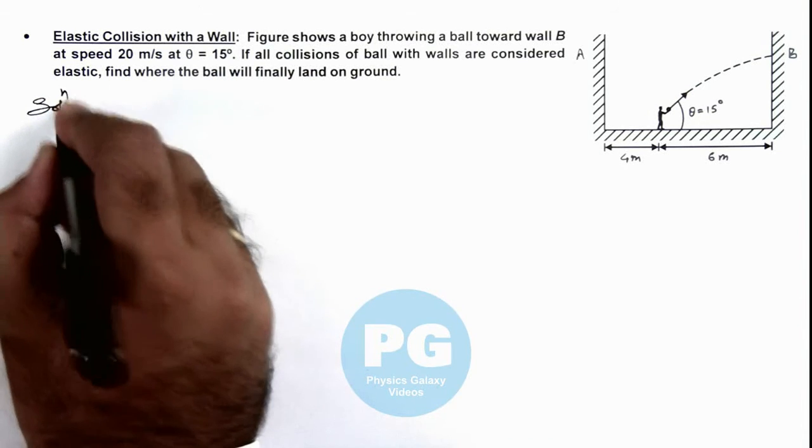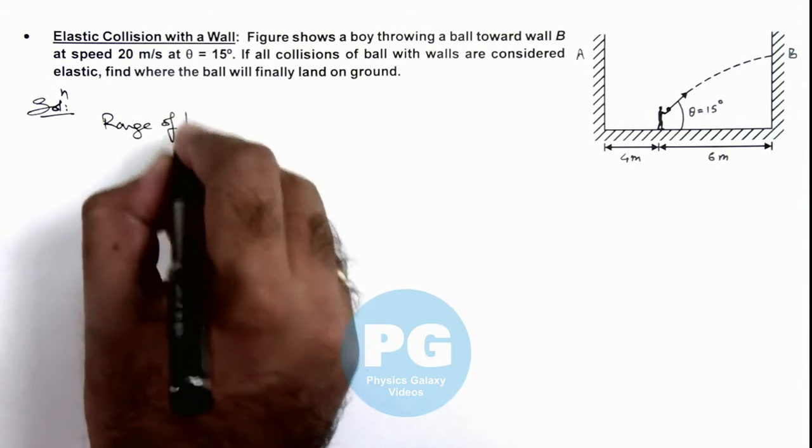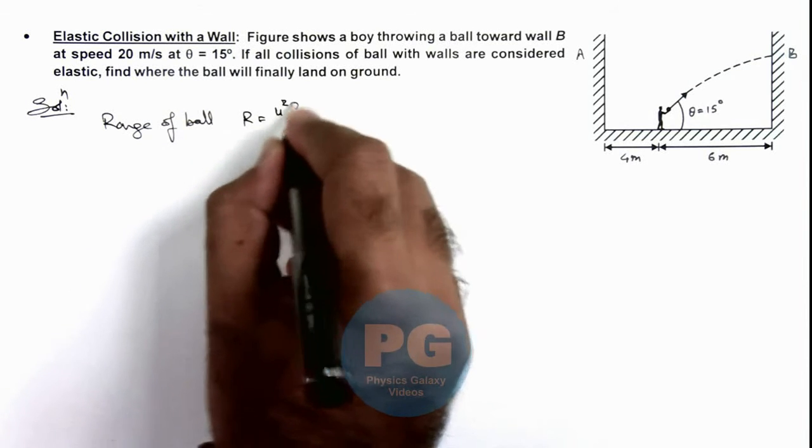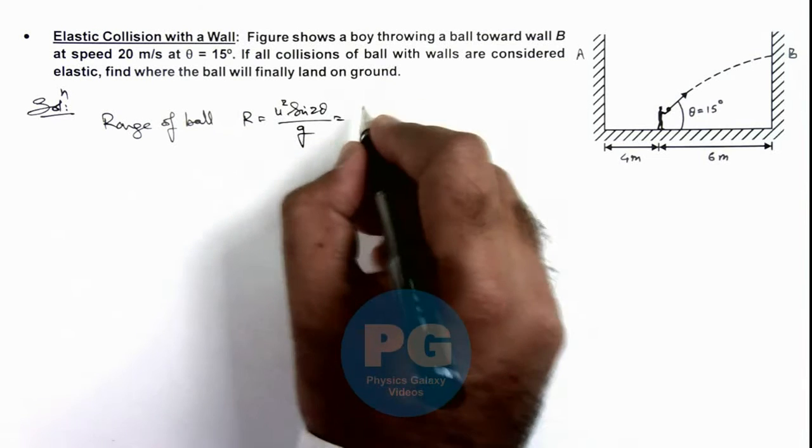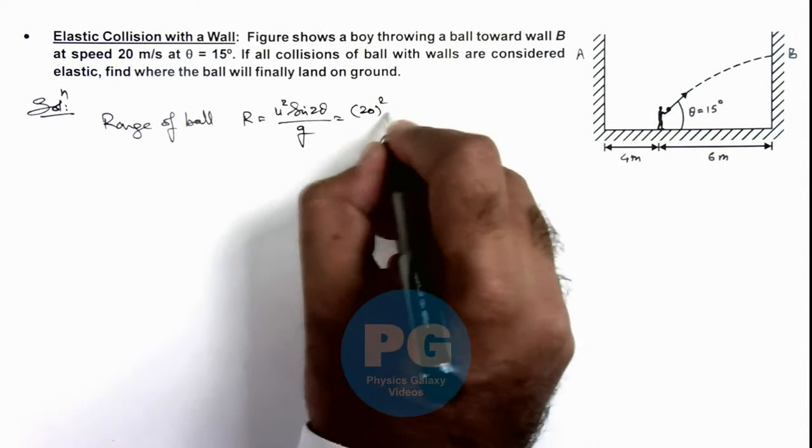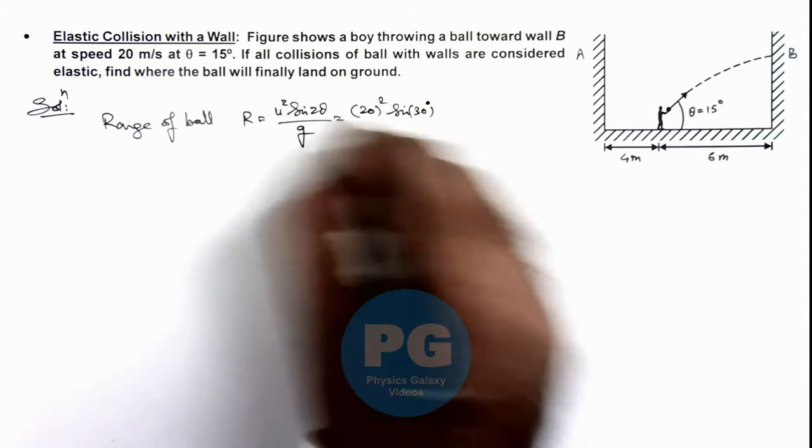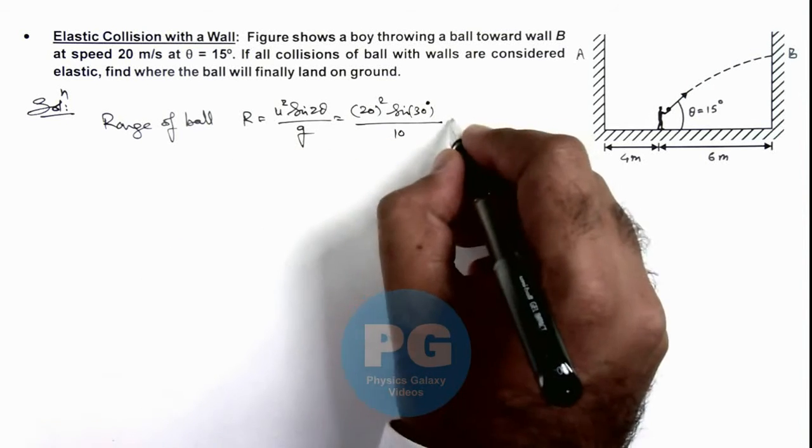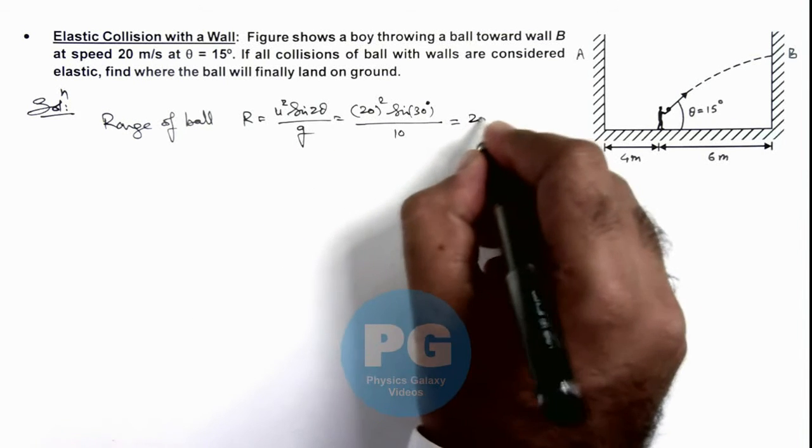Here, first we need to calculate the range of ball on horizontal plane, which can be given by u squared sine 2 theta by g. If we substitute the values, this is 20 squared sine 30 degrees, as theta is 15 degrees, divided by 10. G we can take as 10. So the result we are getting is 400 by 20, this is 20 meters.